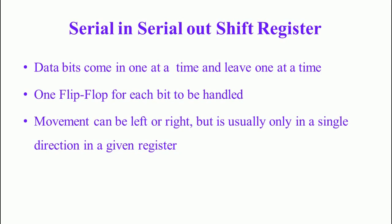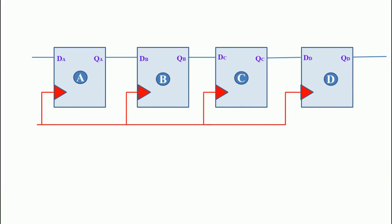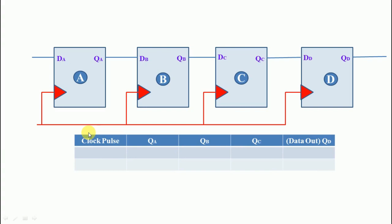Now we are going to see the construction of the serial-in serial-out shift registers. Here we are using four flip-flops, and this four-bit shift register handles four bits of data. The first flip-flop output is connected to the input of the second flip-flop, the second flip-flop output is connected to the input of the third flip-flop, the third flip-flop output is connected to the input of the fourth flip-flop, and the fourth flip-flop output is the data output. The first flip-flop input is called the data input. All flip-flops are connected to a common clock pulse.